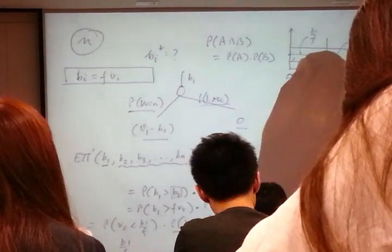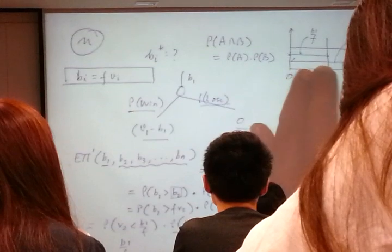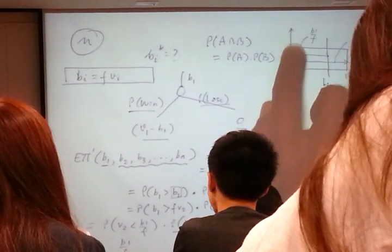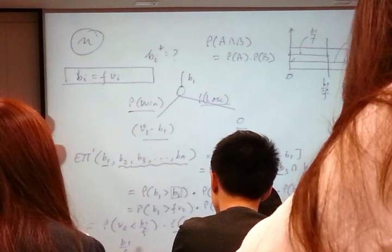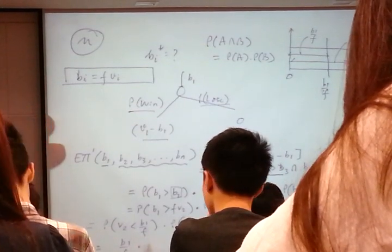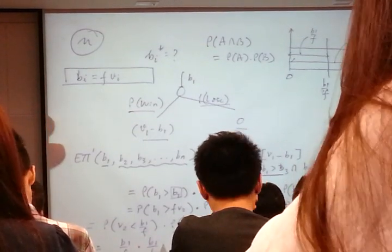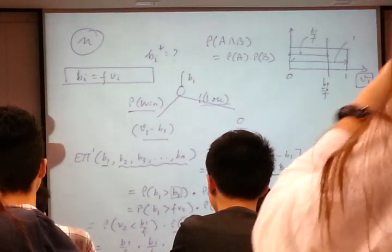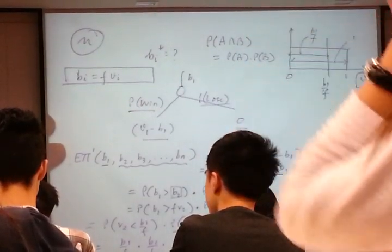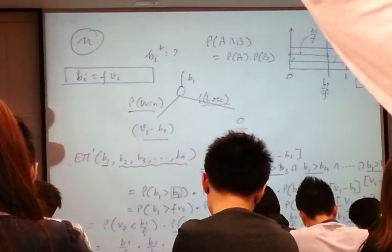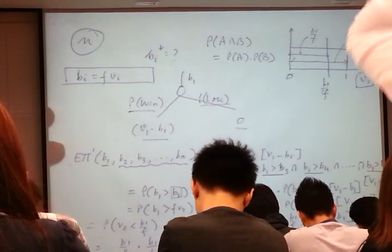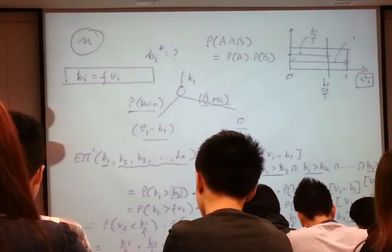What is the probability that if I draw the third bidder, his valuation will be here? This line segment over this line segment, which is B1 over F·H. What is the probability that the Nth bidder will have a valuation less than B1 over F? Also B1 over F·H.